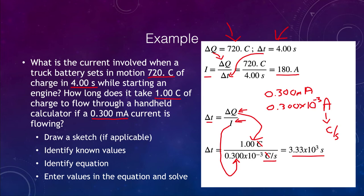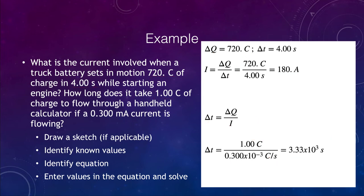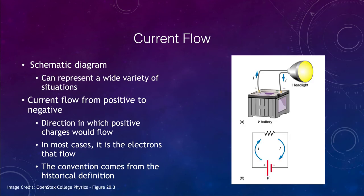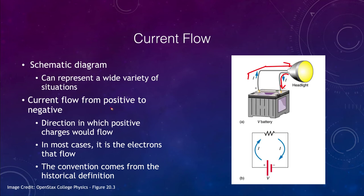That gives us the basics of current. Now we want to look at how current flows and how we can represent that. We can have different types of diagrams — for example, one showing a headlight attached to a car battery, showing how current flows through into the light, lighting it, and then back into the battery. There has to be a complete circuit for the current to travel. The current flows from the positive to the negative — this is the direction in which positive charges would flow, and that's how things have been defined.